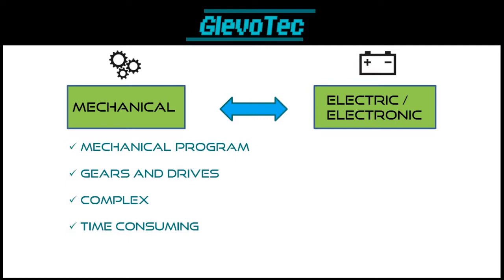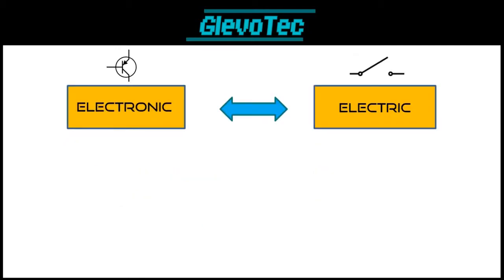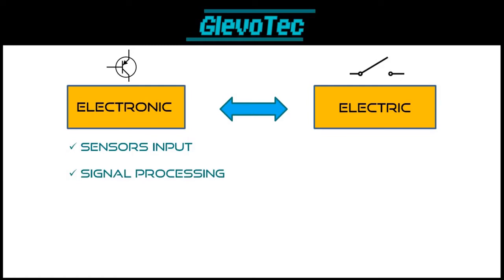We won't go into those any further. Electric and electronic robots, however, are what we know as the most common robot type. They use electrical circuits and often a set of sensors as input, and motors and other electrical output systems called actuators. But what is the difference between electric and electronic? Well, they overlap sometimes, but basically an electronic robot relies on sensors that detect something about its environment, converts that into a small electrical signal, which is processed by an electronic circuit to create a certain output. We call this signal processing.